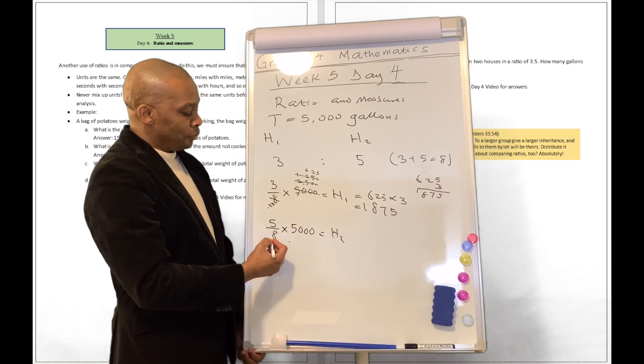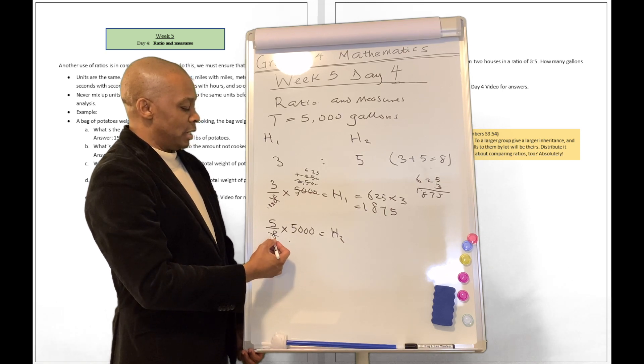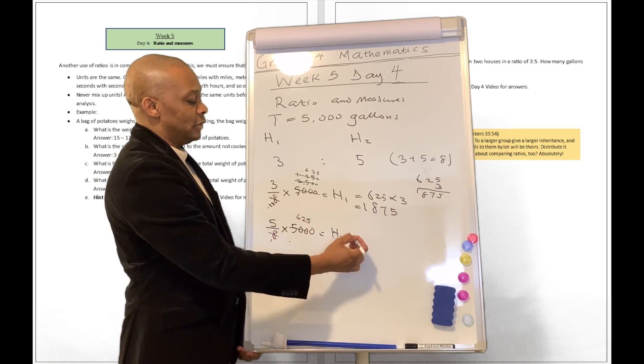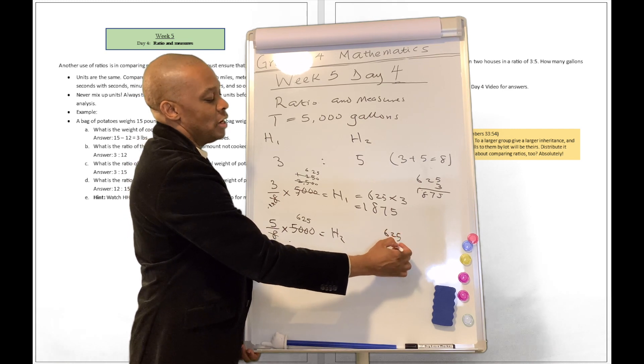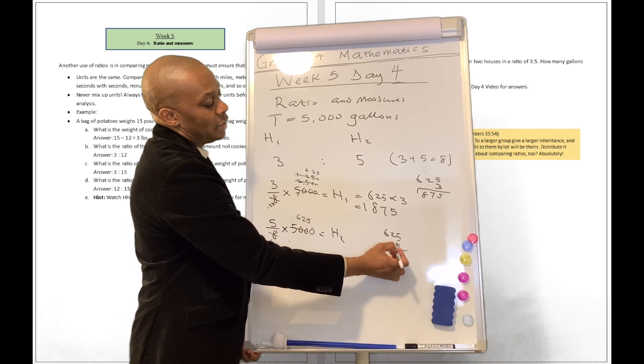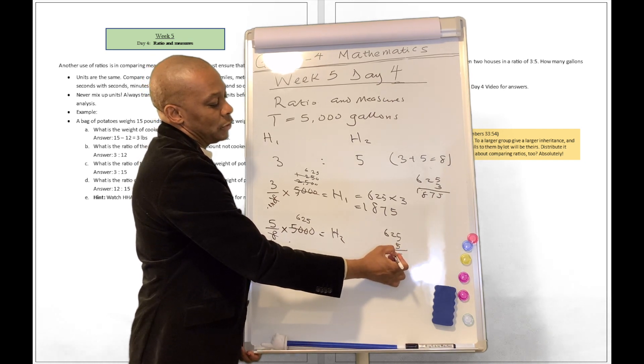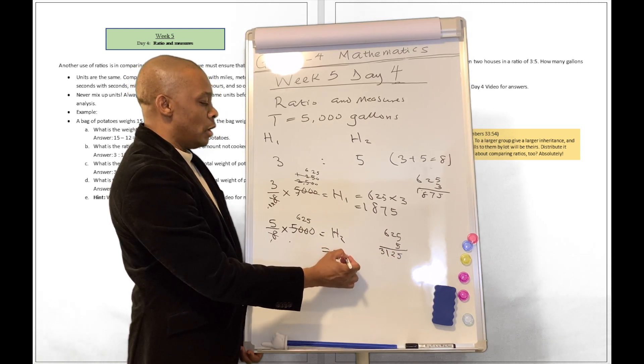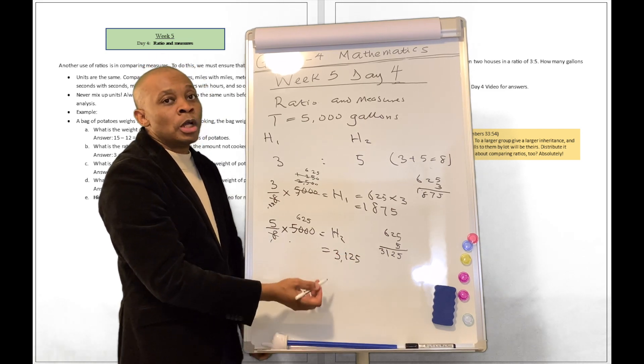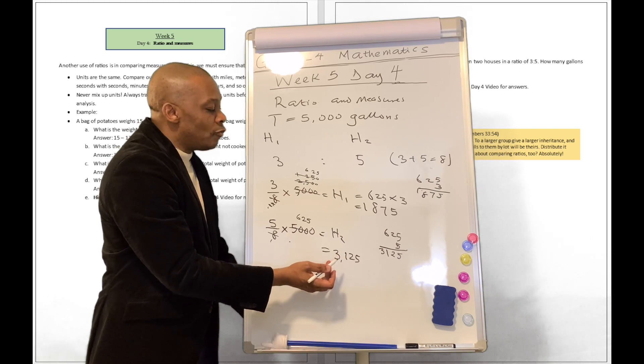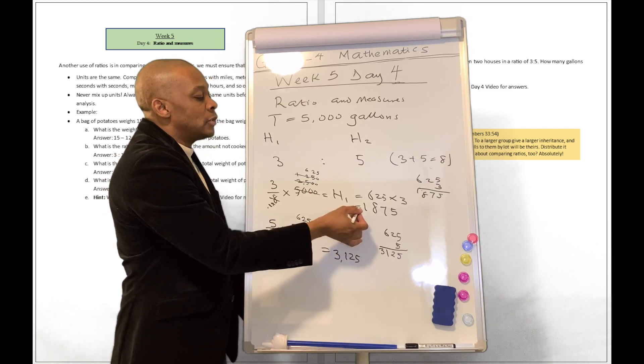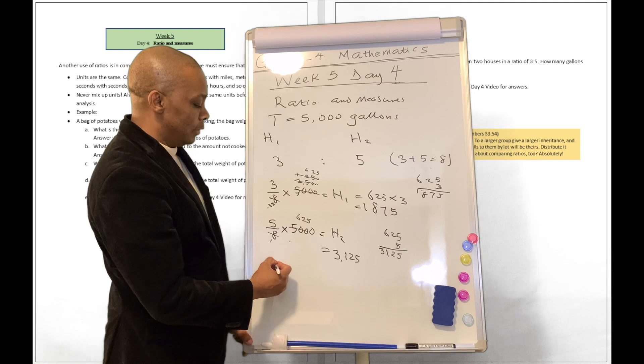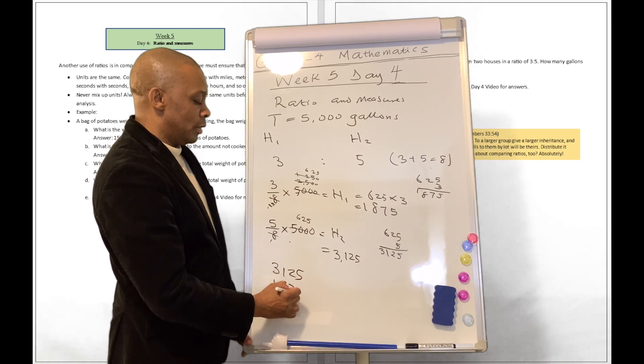Let's do house 2. Since we know this is going to be 8 here, 1, 625 multiplied by 5. So let's do that real quick. 6, 25 multiplied by 5. 5 times 5 is 25, carry 2 over. 5 times 2 is 10 plus 2, that's 12. Carry 1 over, and that's going to be 31. So house 2 will have 3,125 gallons of water.